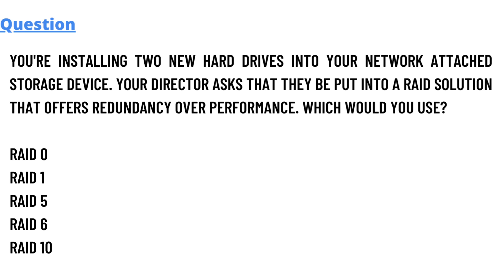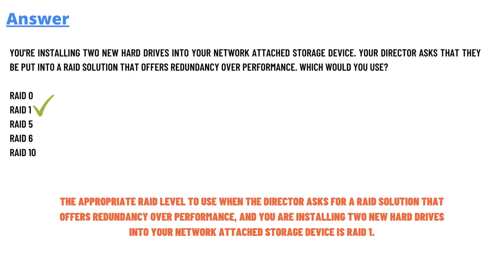The correct answer is the appropriate RAID level when the director asks for a RAID solution that offers redundancy over performance and you are installing new hard drives into your network attached storage device is RAID 1. To explain this further, if your director has requested a RAID solution that offers redundancy over performance, RAID 1 is the appropriate option to consider.